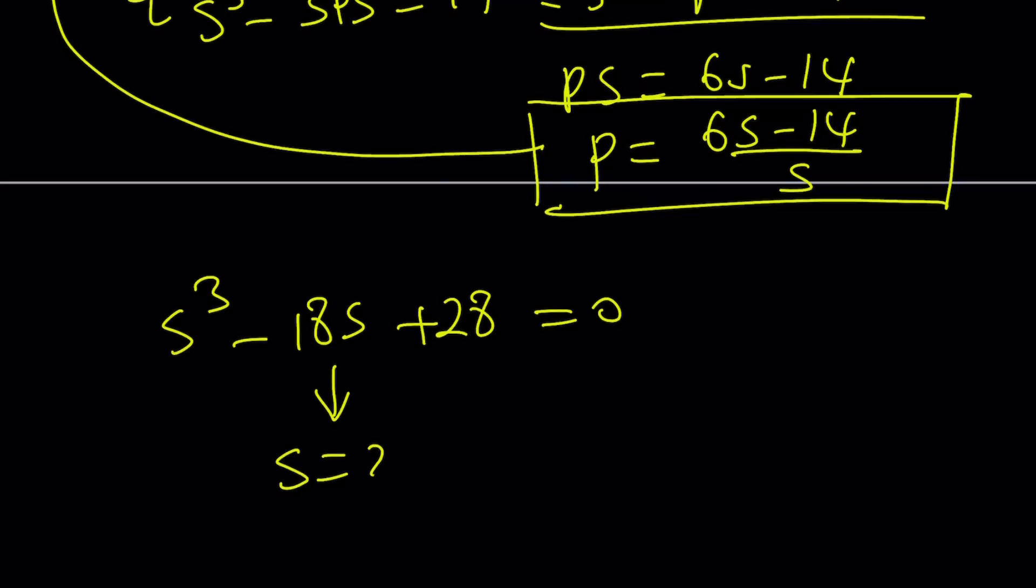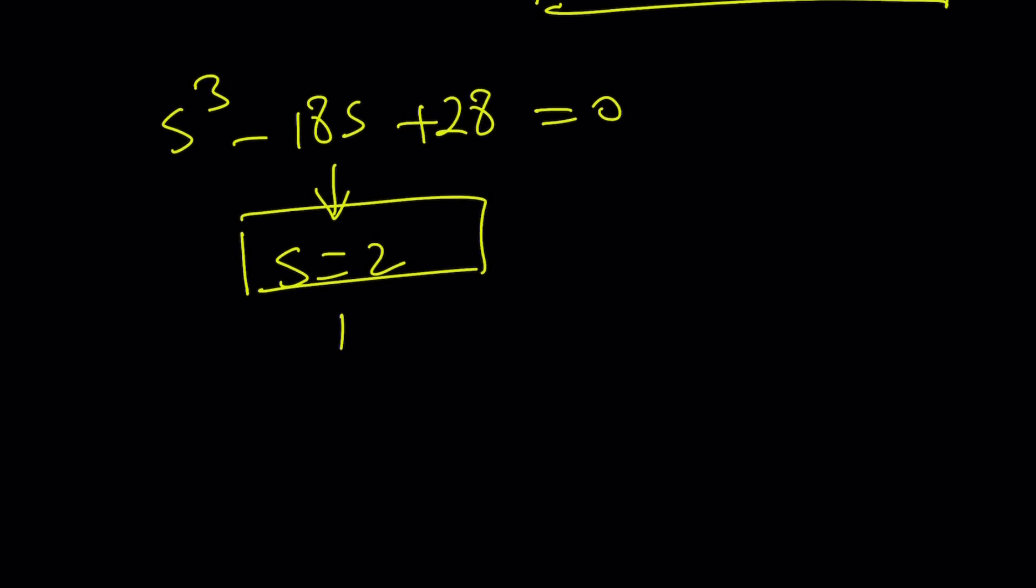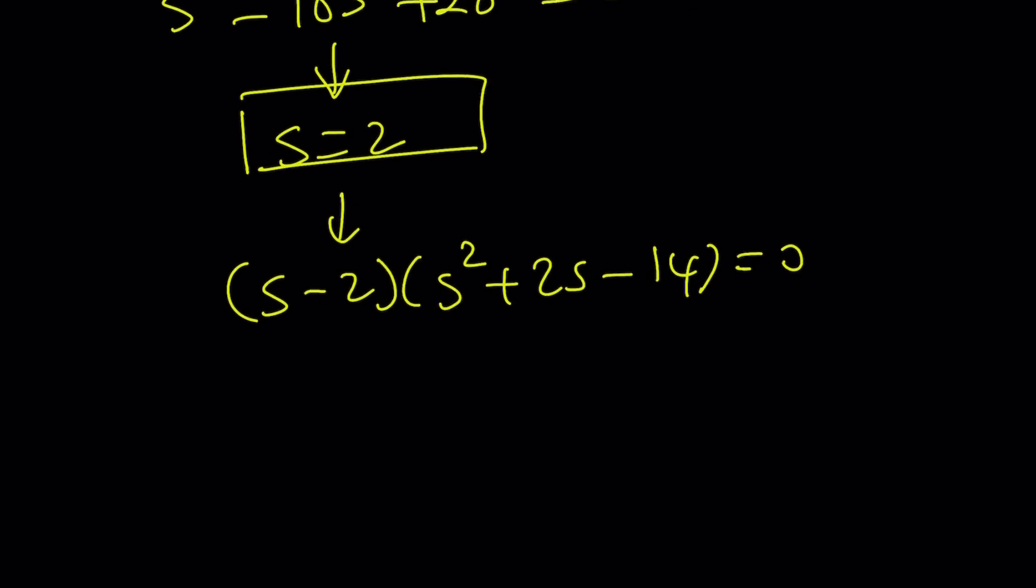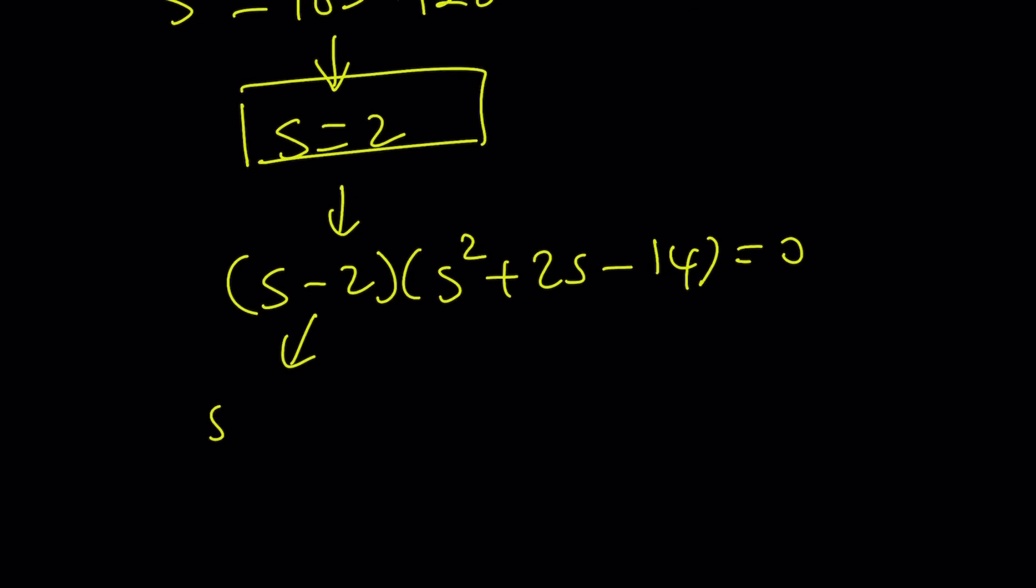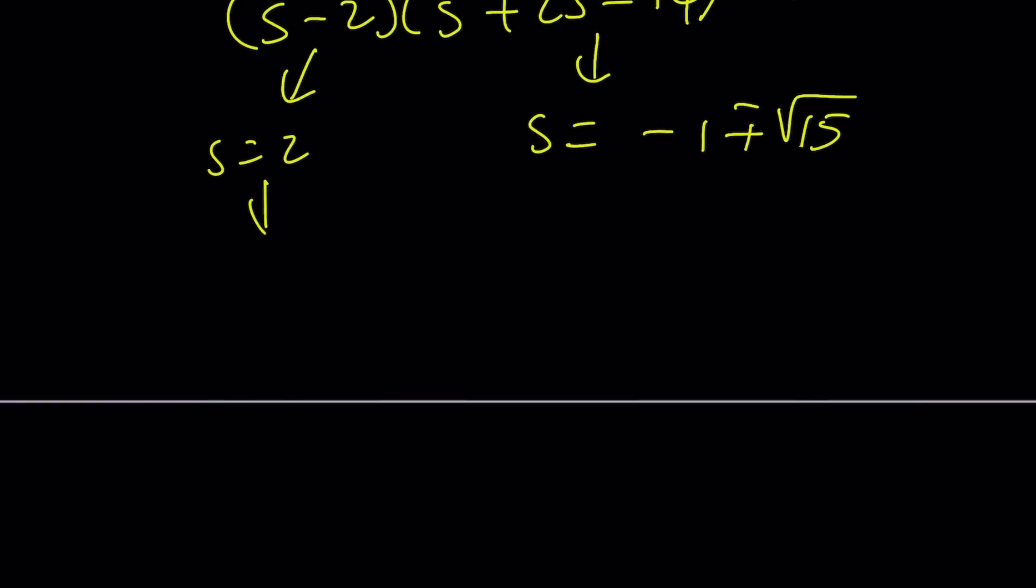s equals 2 appears as a rational solution. And after some polynomial division, you're going to get s minus 2 times s squared plus 2s minus 14 equals 0. From here, s becomes 2. You already knew that. And the other equation gives us s equals negative 1 plus minus root 15. Aha! That explains the square root of 15 that pops up.